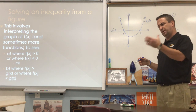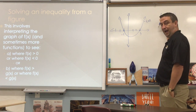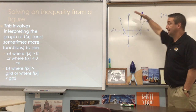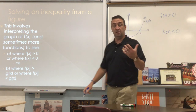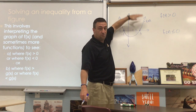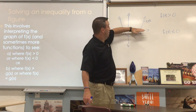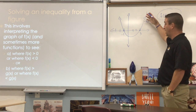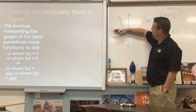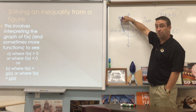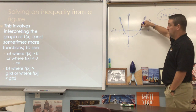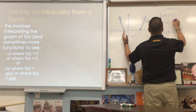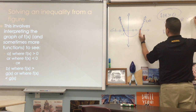Think about the big picture: f(x) is y. Where is y greater than 0? That's above the x-axis. Where is y less than 0? That's below the x-axis. So for this parabola, where is it greater than 0? It's greater than 0 on the left wing and the right wing. We express the answer in terms of x: my function is greater than 0 when x is less than negative 1, or when x is greater than 3.